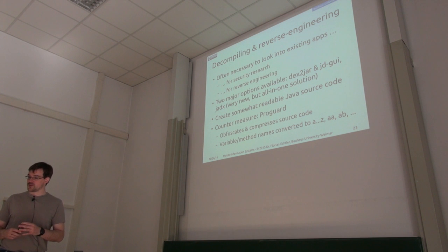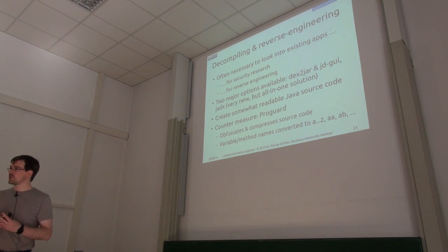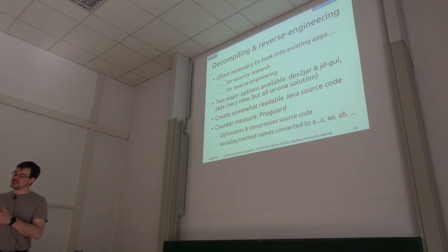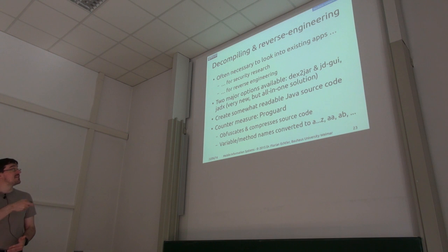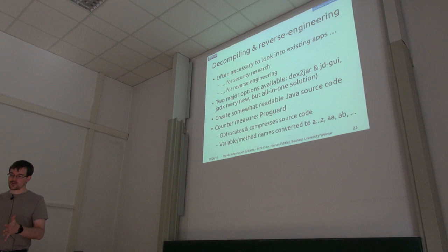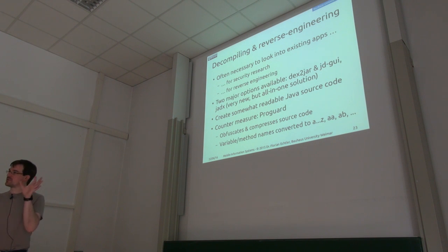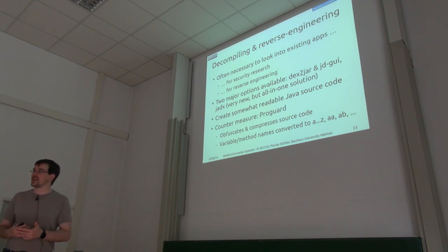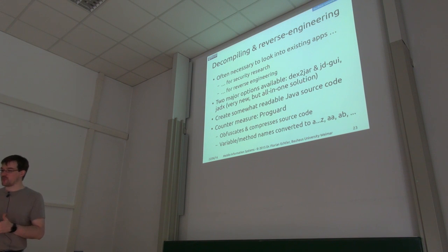There is a countermeasure which is often used by commercial apps, called ProGuard. This is already built into Android Studio. It tries to make the decompiled source code that comes out of these tools harder to read. For example, after your original source code has been compiled, if it's just a regular Java compilation, you can still read all the variable names and method names — they still tell you what the method is going to do. And that can already help you a lot in understanding how the app works internally.